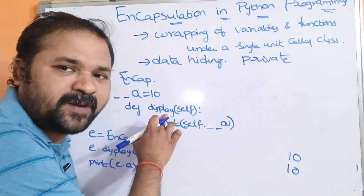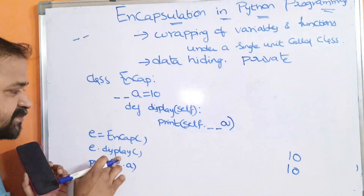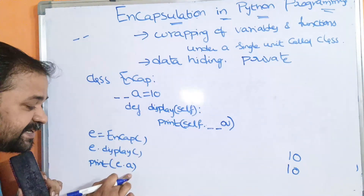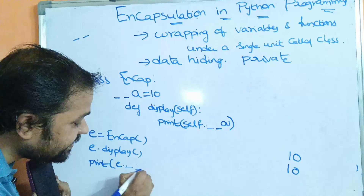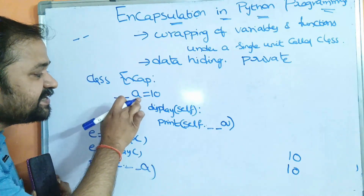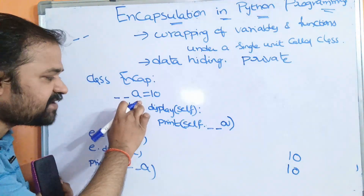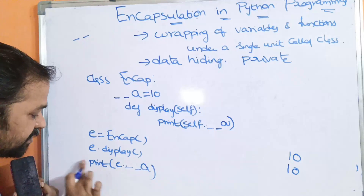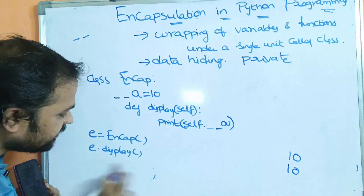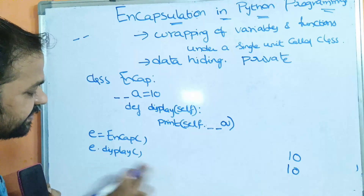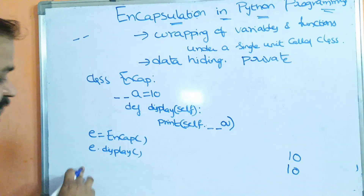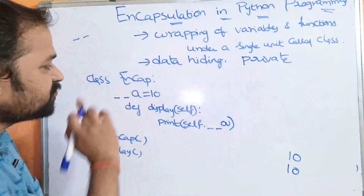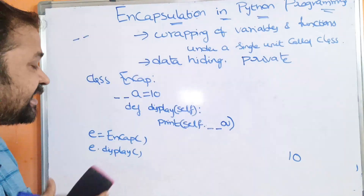Here, display is a public function. So, there is no problem. We can access the display function. But print of e.a is wrong. Why? Because a is defined as a private variable. We can access private variable only inside this class. So, we can't access this a from outside the program — the Python interpreter will give an error message. e.display — control goes to the display function, print of self.__a. What is a value? 10. So, we will get 10 as the output.